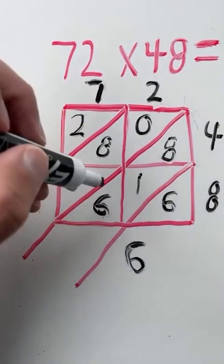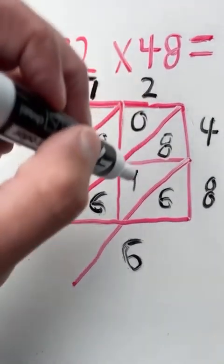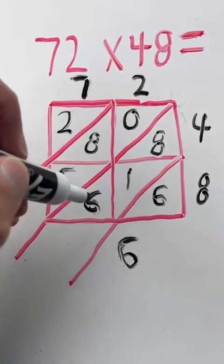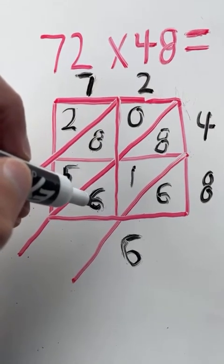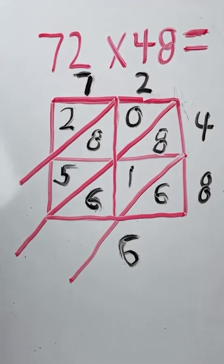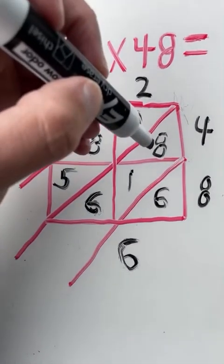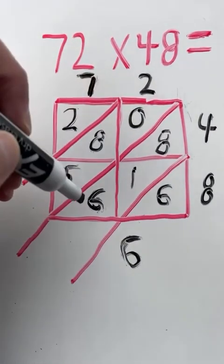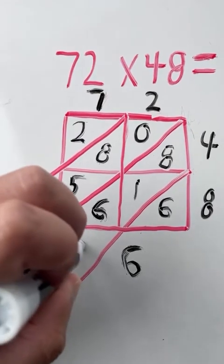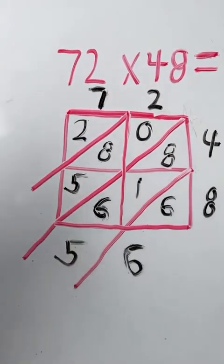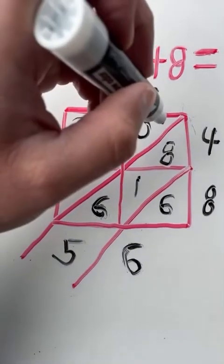Now in between these two diagonal lines, we have to add eight plus one plus six. That's going to be the digit that represents the tens place. If our sum is more than 10, we will need to regroup. So eight plus one is nine plus six is 15. The five in 15 goes in the tens place. The one gets carried over.